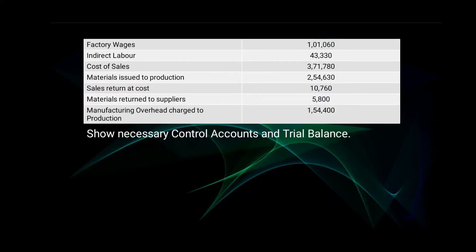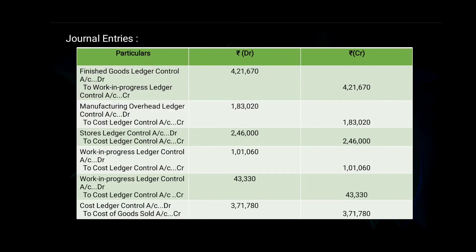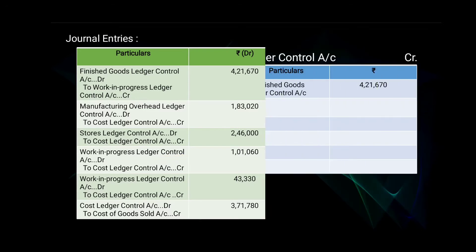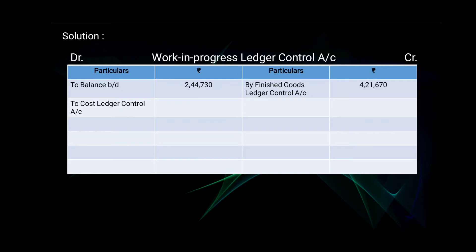Next, factory wages — 1 lakh 1,060. The journal entry recorded was Work in Progress Ledger Control Account debit, to Cost Ledger Control Account — 1 lakh 1,060. The first effect is given in Work in Progress Ledger Control Account as 'to Cost Ledger Control Account — 1 lakh 1,060.'